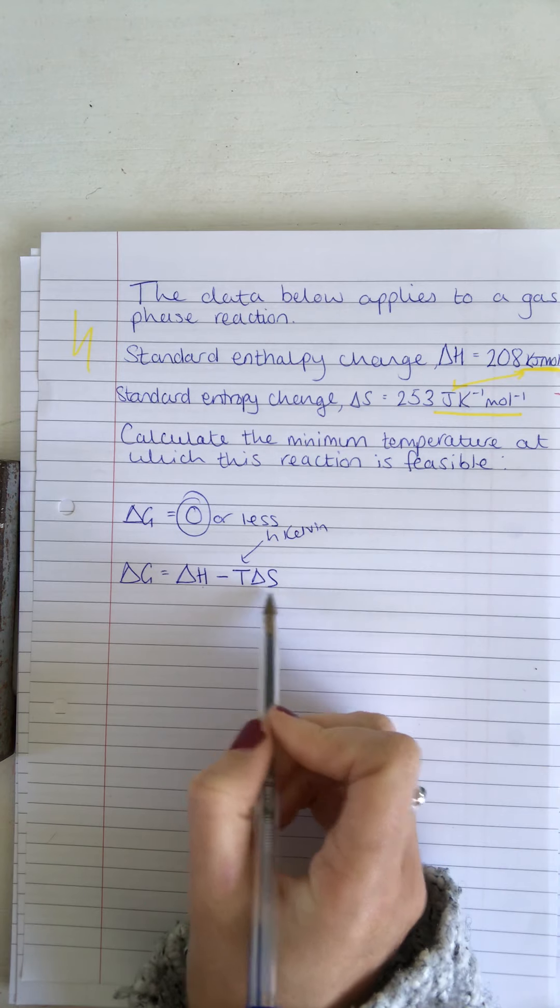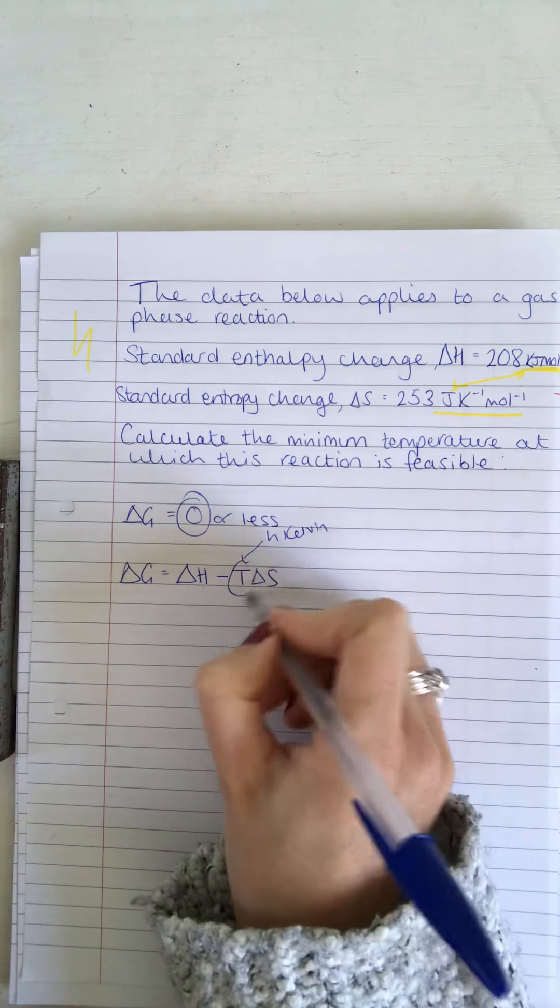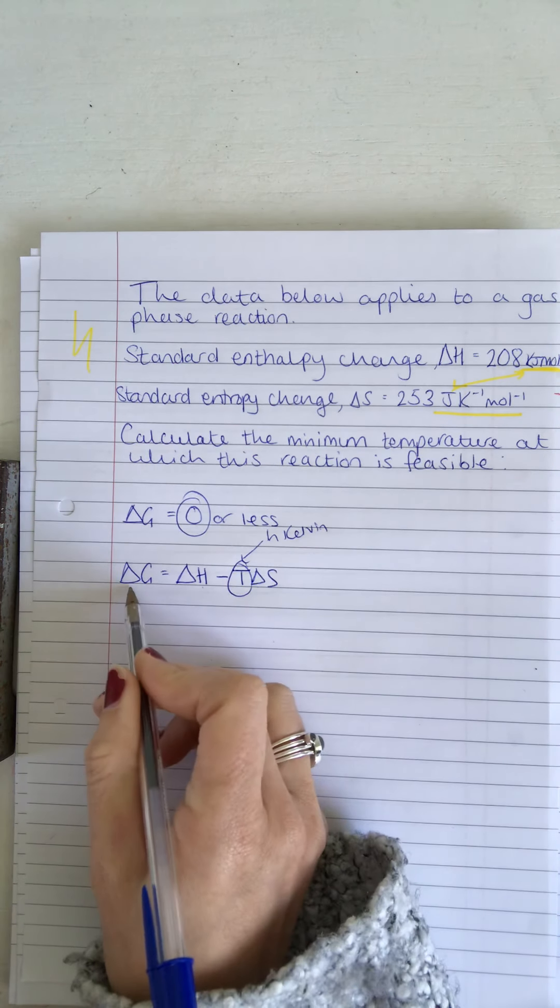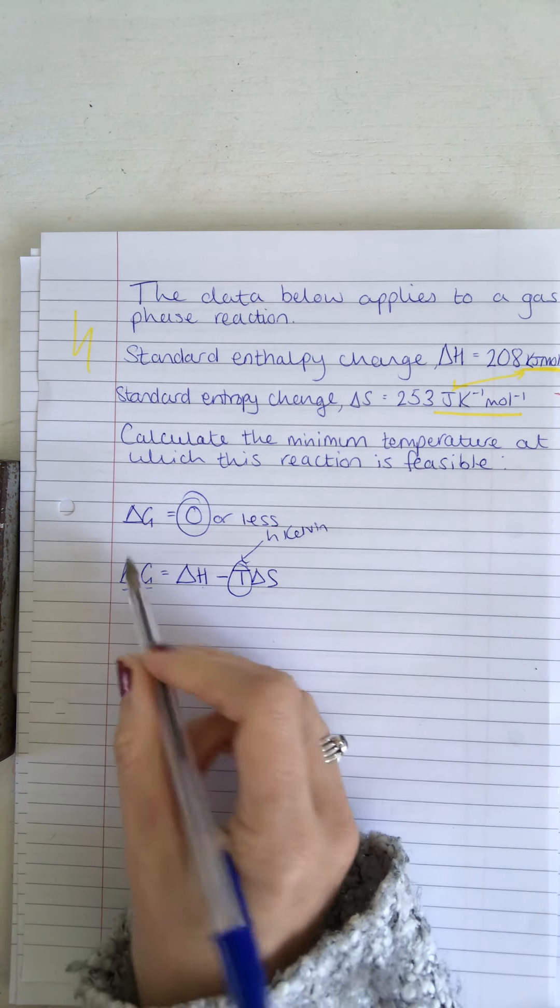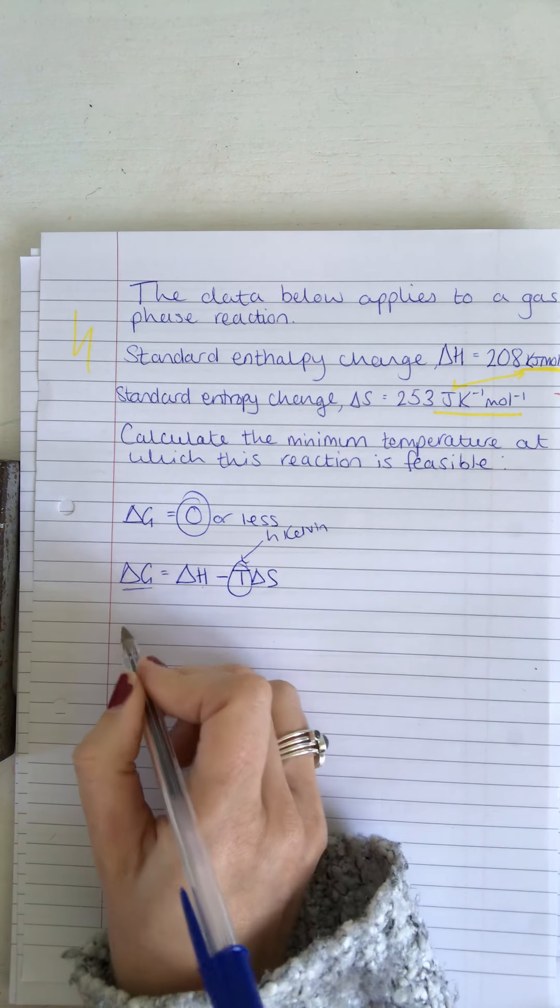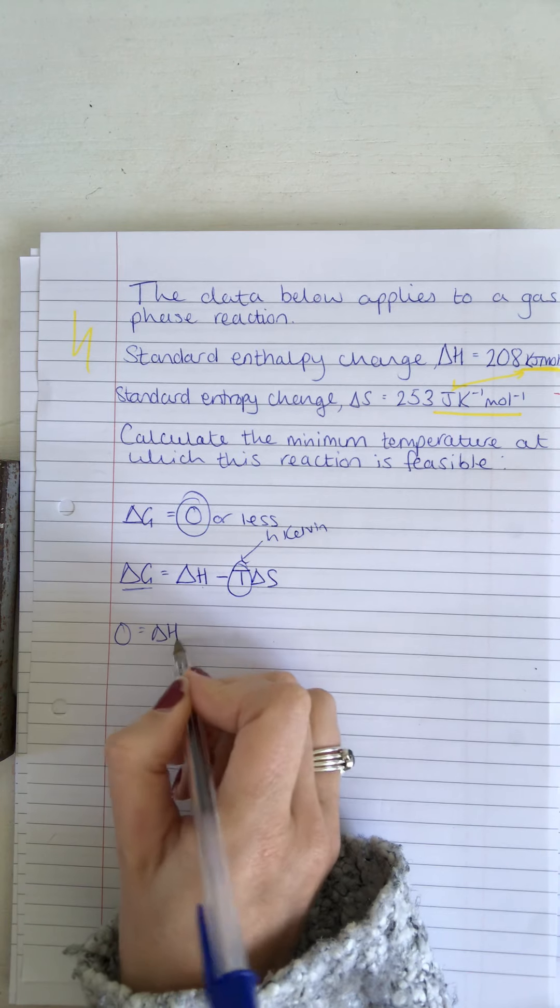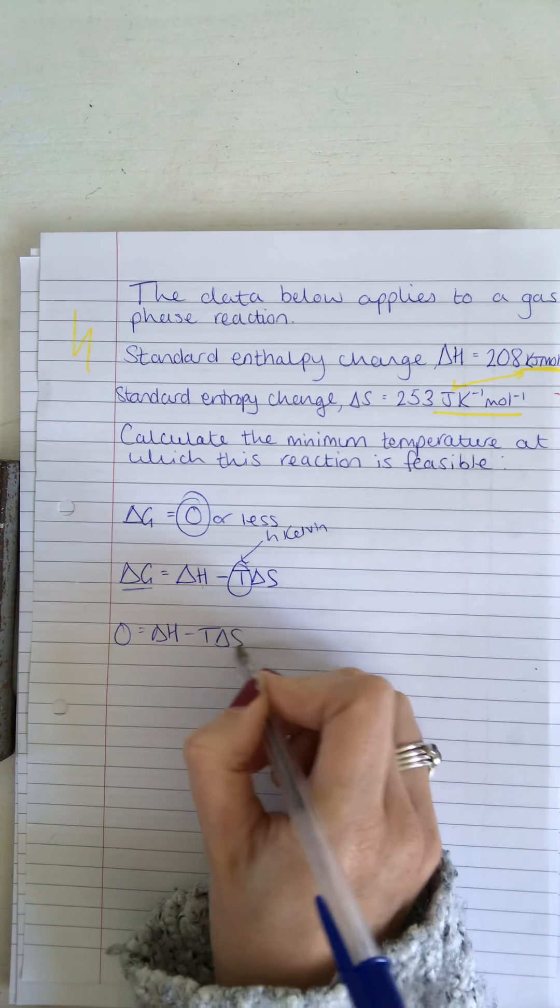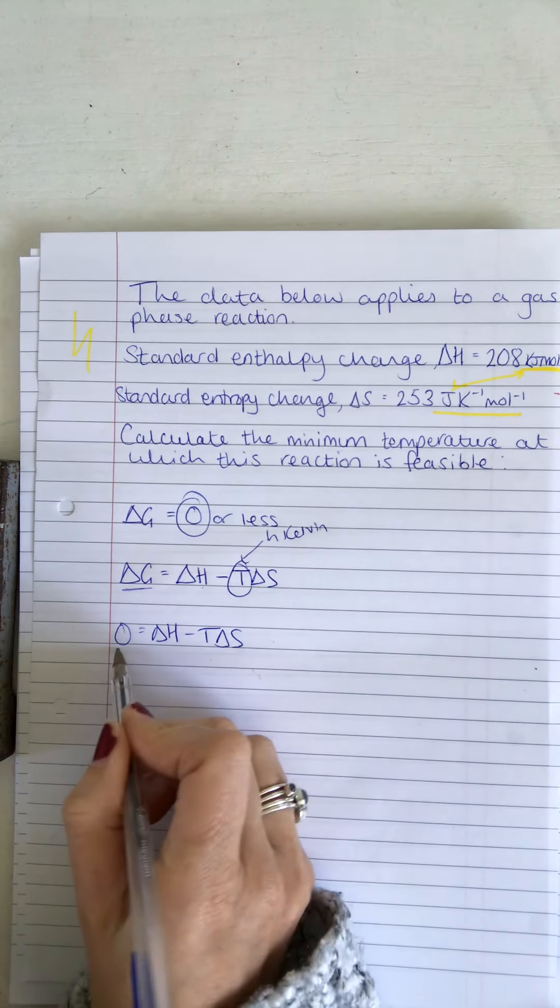Okay, so we've been given the enthalpy change and we've been given the entropy change. We're being asked to calculate temperature, so we've got in theory another unknown value, but we assume that this equals zero. So we're saying zero equals that, because zero is the highest value Delta G can be in order for the reaction to be feasible.